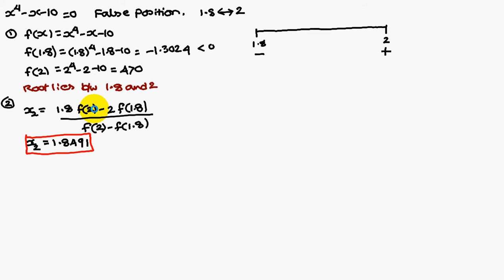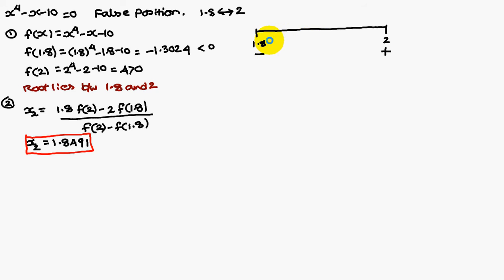f(2) is 4, and f(1.8) is minus 1.3024. Substitute the values — you are going to get x2 = 1.8491. So 1.8491 lies somewhere on the real line, and now it is our aim to find out whether the root lies in the left half or the right half.